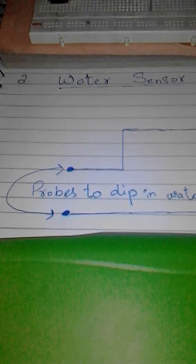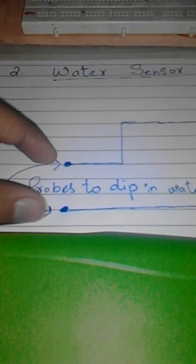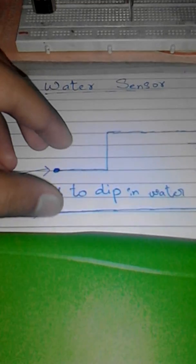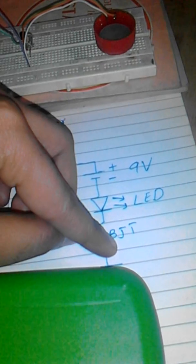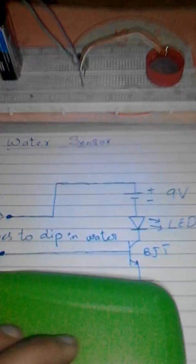These two probes and jumper wires sense the water and actually permit the current flow in this direction, going into the base side of the BJT transistor. Further, this BJT transistor switches on this LED. This is the simple working principle of this whole circuit diagram. Now I'm going to show you my original breadboard circuit.